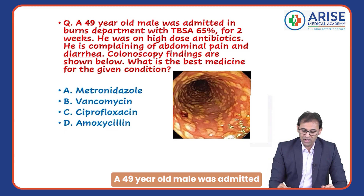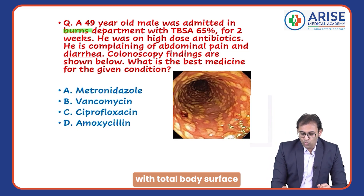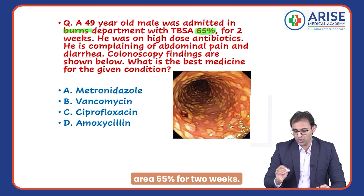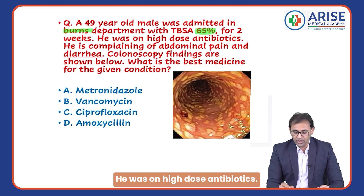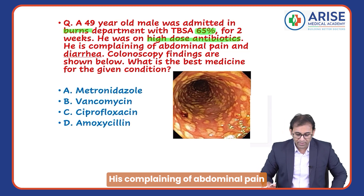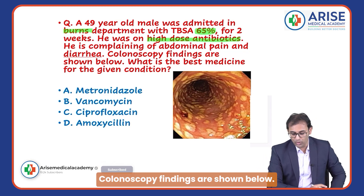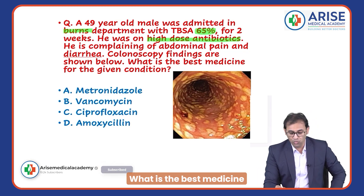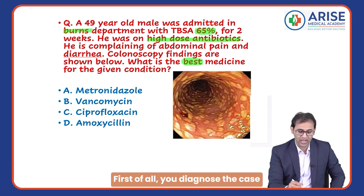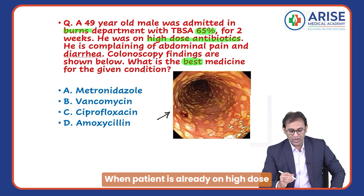A 49-year-old male was admitted in the burns department with total body surface area 65 percent for two weeks. He was on high-dose antibiotics and is complaining of abdominal pain and diarrhea. Colonoscopy findings are shown below. What is the best medicine for the given condition? First of all, diagnose the case — what is the diagnosis here?